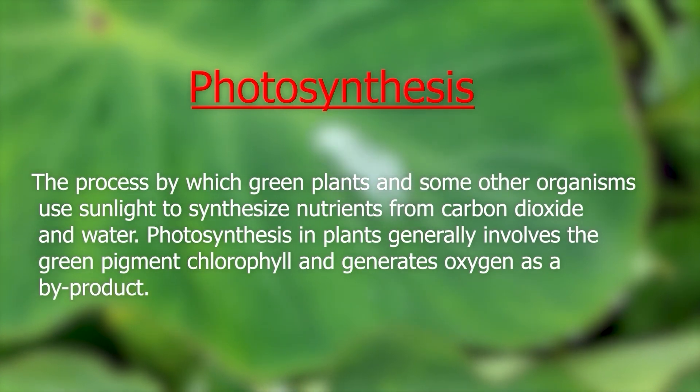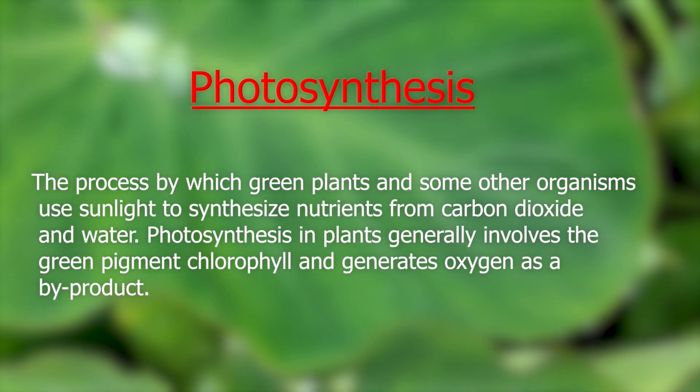There are three elements of plant growth: photosynthesis, respiration and transpiration. Photosynthesis is the process by which green plants and certain other organisms transform light energy into chemical energy. During photosynthesis in green plants, light energy is captured and used to convert water, carbon dioxide and minerals into oxygen and energy-rich organic compounds. It would be impossible to overestimate the importance of photosynthesis in the maintenance of life on earth. If photosynthesis ceased, there would soon be little food or other organic matter on earth, most organisms would disappear, and the atmosphere would become nearly devoid of gaseous oxygen.